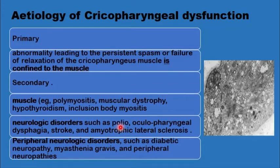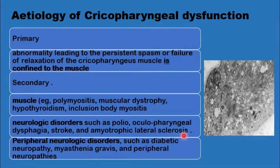The first operation for cricopharyngeal myotomy was actually carried out on a polio patient. Other causes include oculopharyngeal dysphagia, which is a slowly progressive condition, or amyotrophic lateral sclerosis, which is rapidly progressive. It can also be due to peripheral neurological disorders in diabetes, myasthenia gravis, and peripheral neuropathies.